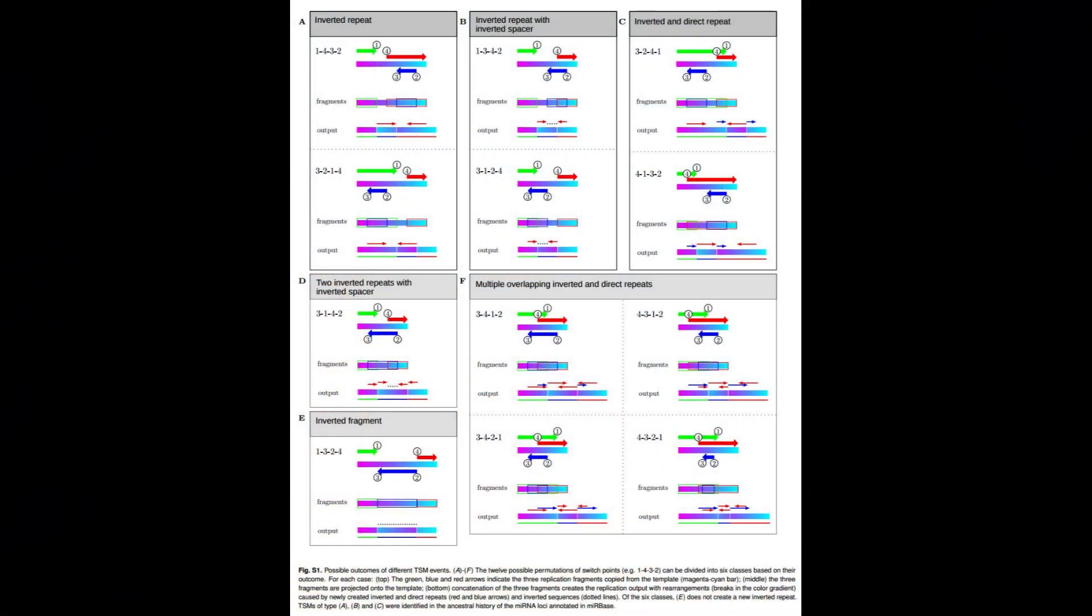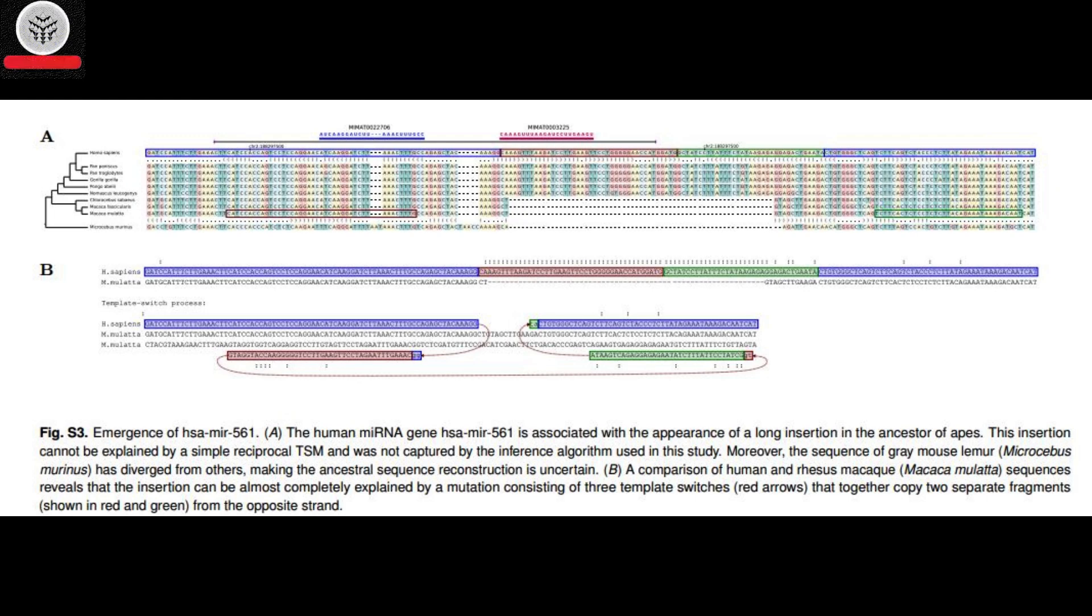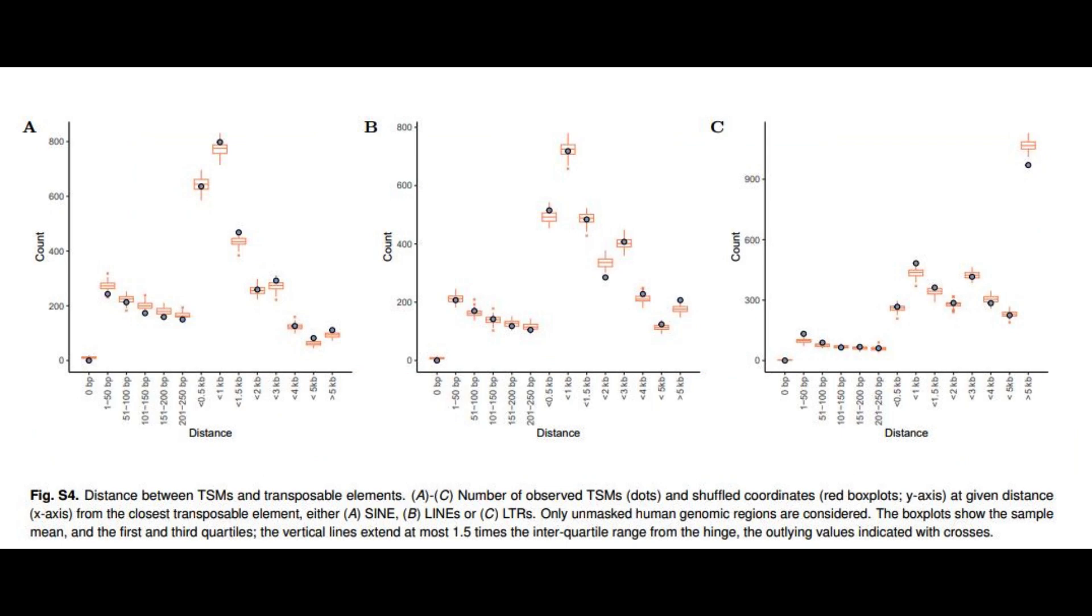Today's video focuses on an intriguing discovery made by researchers at the University of Helsinki. They have uncovered a fascinating mechanism that gives rise to DNA palindromes, which in turn can evolve into microRNA genes.